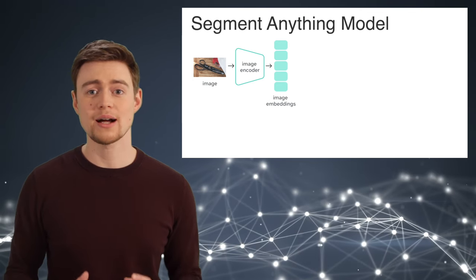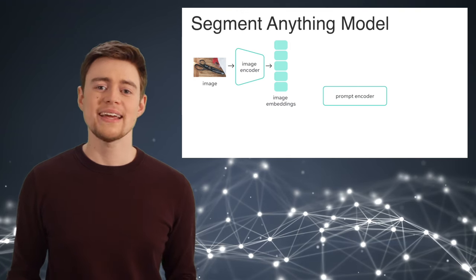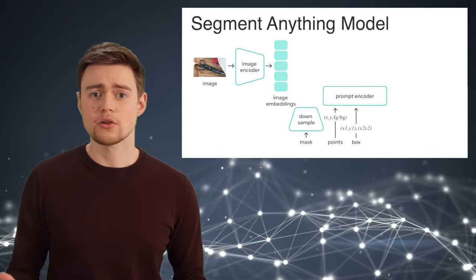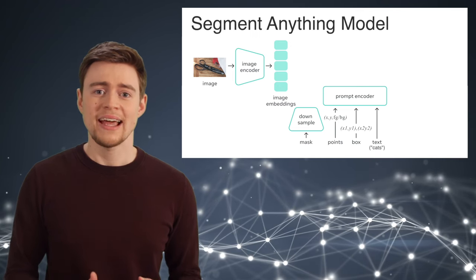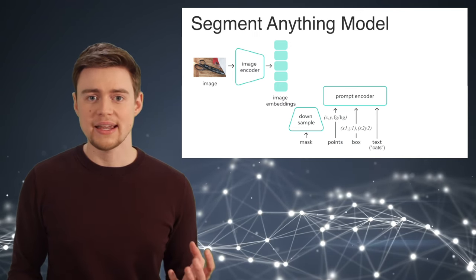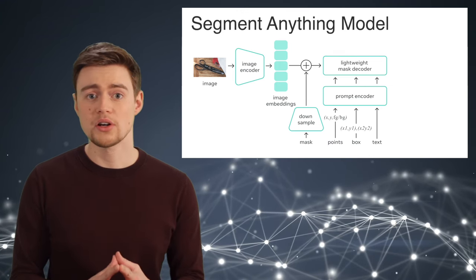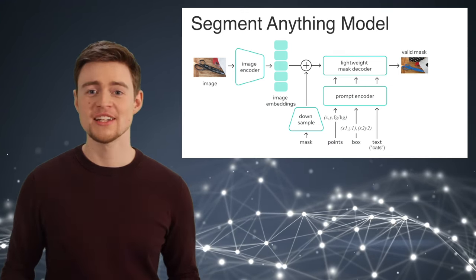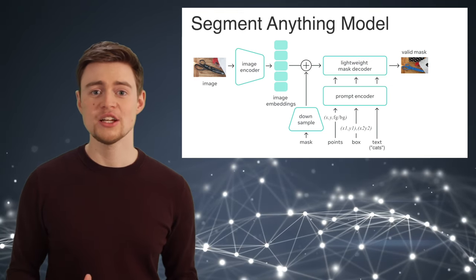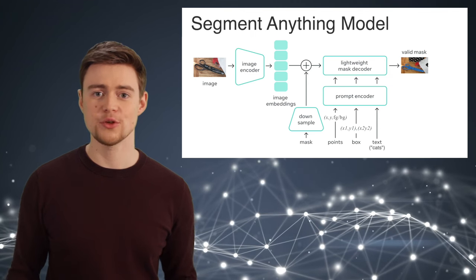That is where the second component comes in — the prompt encoder. It takes a prompt, which can be a set of points, a bounding box, another mask, or simply some text like 'cats', and outputs a prompt embedding. This embedding is then combined with the image embedding and fed into a lightweight decoder that predicts the segmentation masks. This architecture is promptable, and language models like ChatGPT show that prompting is a promising technique for zero-shot and few-shot learning.